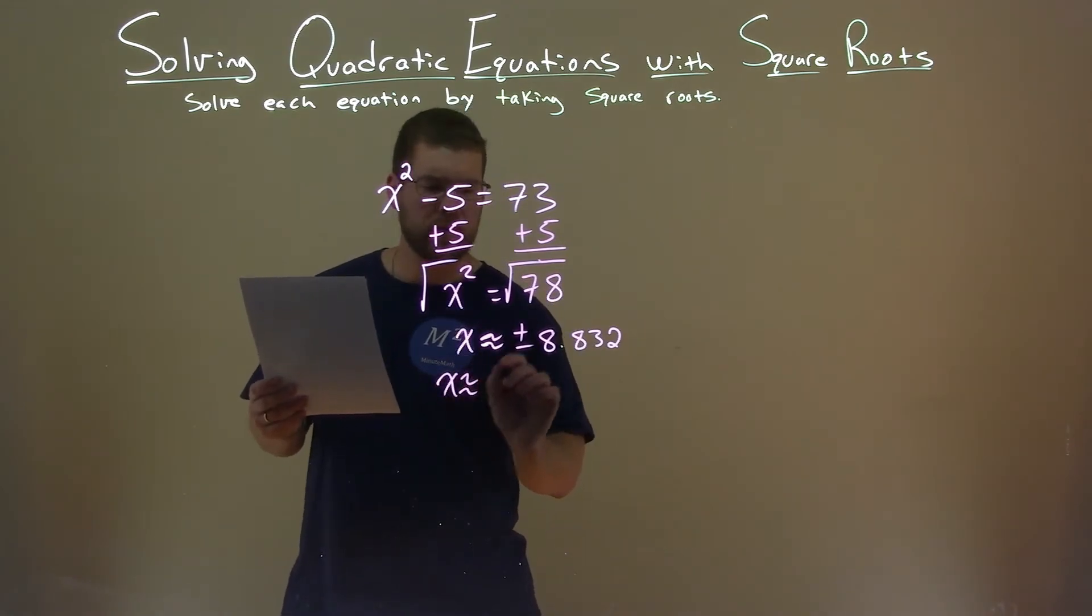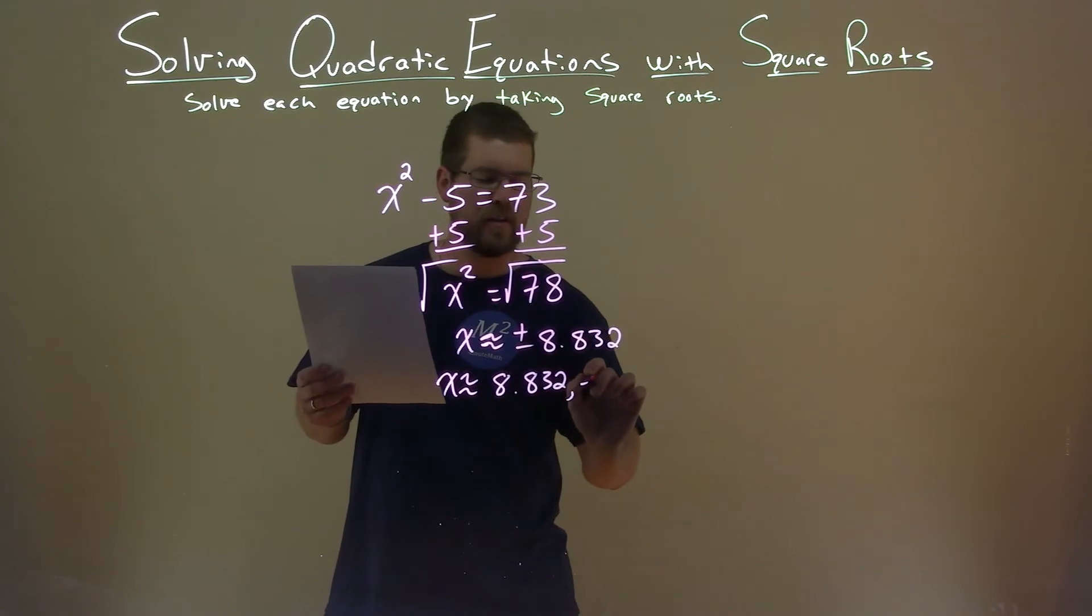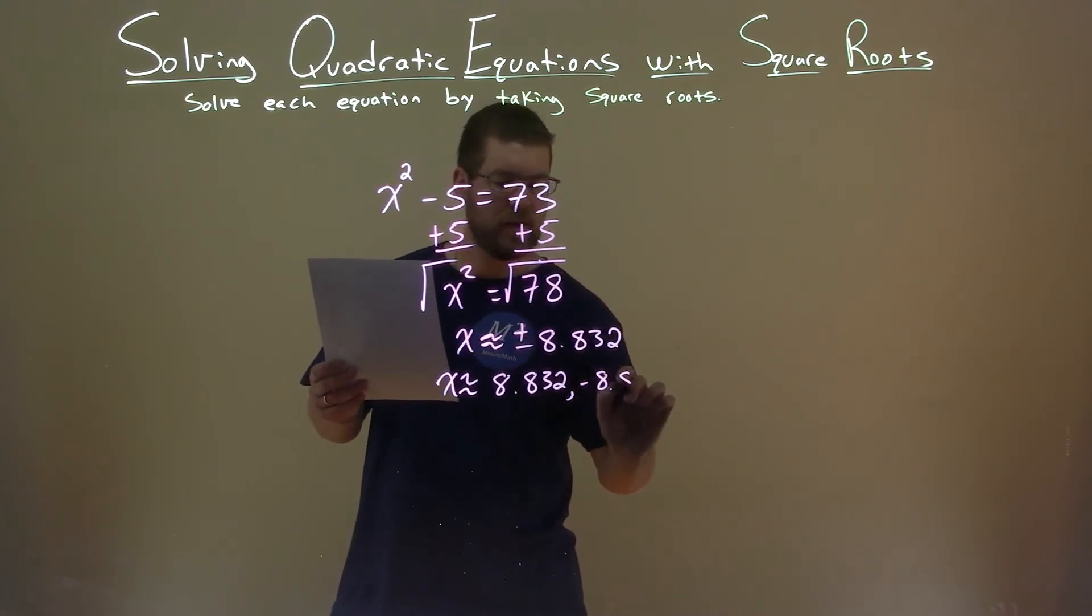Meaning, x is approximately the positive value, 8.832, and the negative value of negative 8.832.